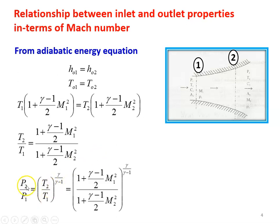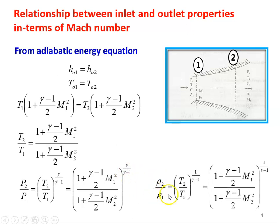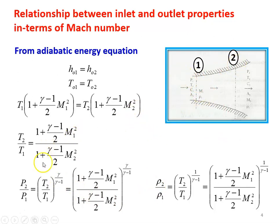Similarly, P2 by P1 equals T2 by T1 to the power Gamma by (Gamma minus 1). Substituting T2 by T1 in terms of Mach number: P2 by P1 equals (1 plus (Gamma minus 1) by 2 M1 squared) divided by (1 plus (Gamma minus 1) by 2 M2 squared), to the power Gamma by (Gamma minus 1). Similarly, the density ratio Rho2 by Rho1 equals T2 by T1 to the power 1 by (Gamma minus 1), which gives Rho2 by Rho1 equals (1 plus (Gamma minus 1) by 2 M1 squared) divided by (1 plus (Gamma minus 1) by 2 M2 squared), to the power 1 by (Gamma minus 1). These are the relationships between pressure, temperature, and density in terms of Mach number between inlet and outlet.